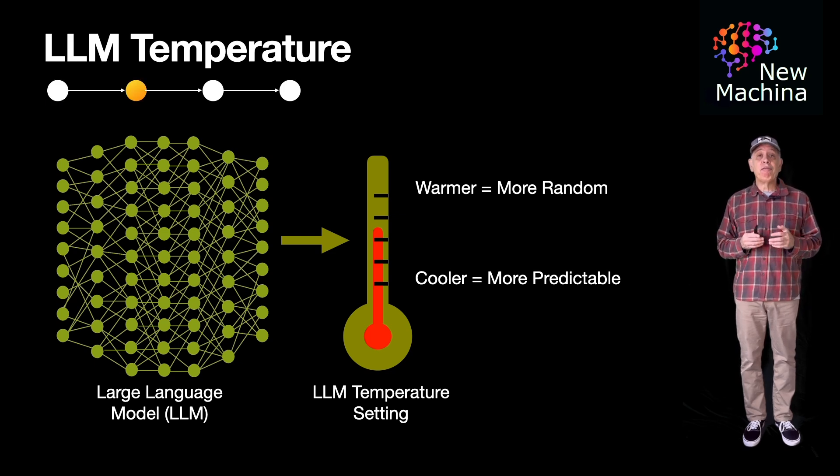Temperature influences how the model generates text by determining how likely it is to choose less probable words or phrases. For example, at zero temperature, the model always picks the most likely next word, while at higher temperatures, it has a higher chance of picking less likely alternatives.